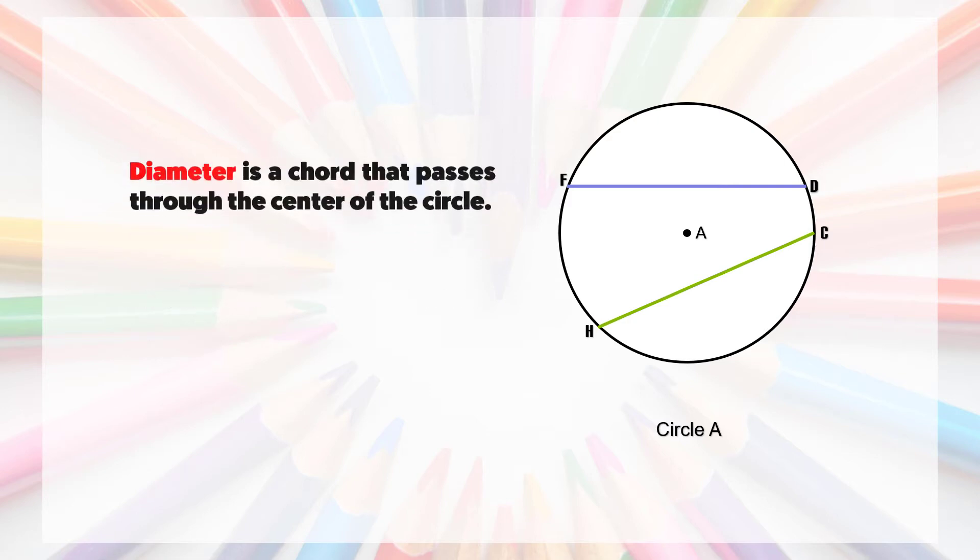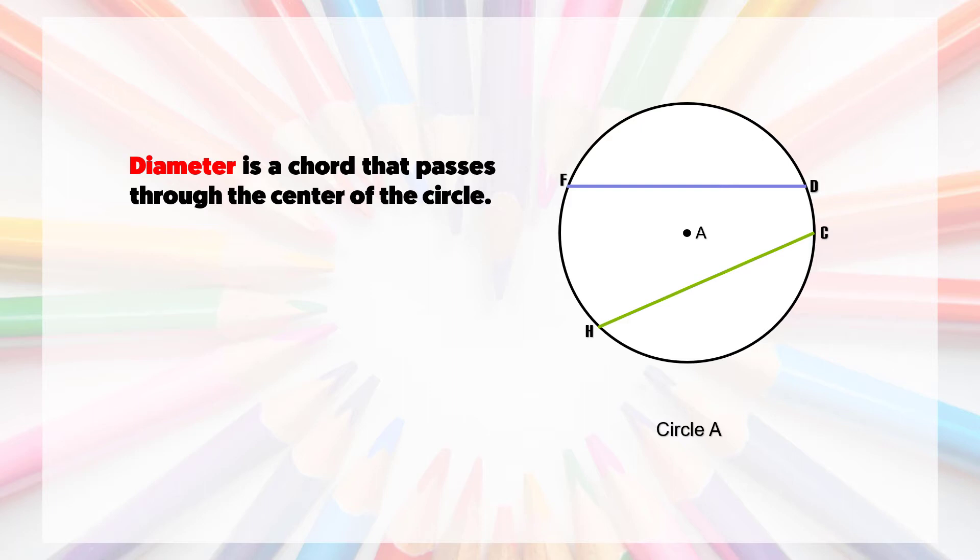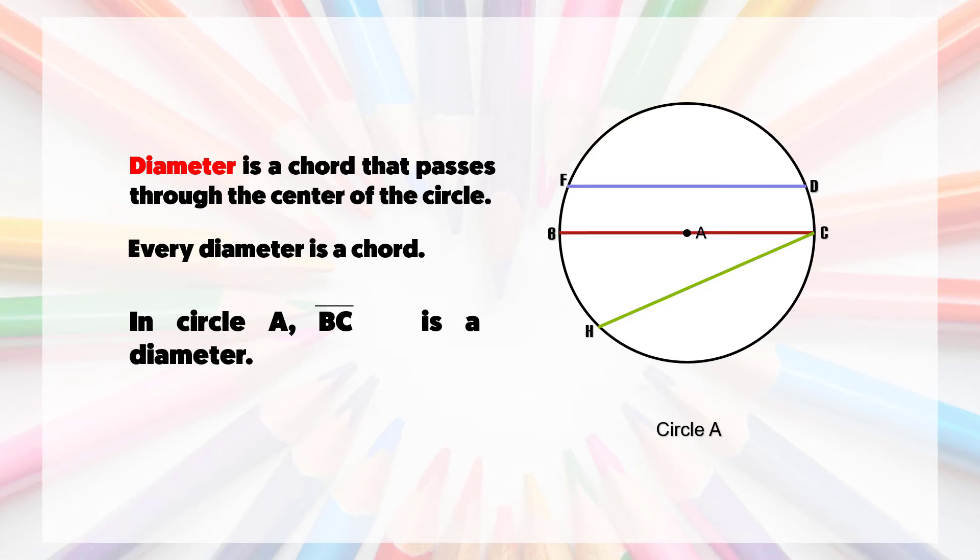Number two, diameter: It is a chord that passes through the center of the circle. Remember, every diameter is a chord. In the given example, line segment BC is a diameter since it passes through the center of the circle.